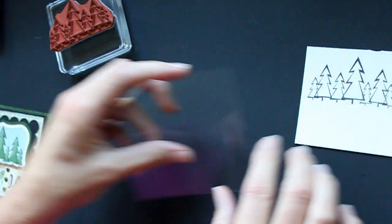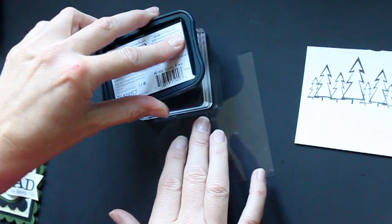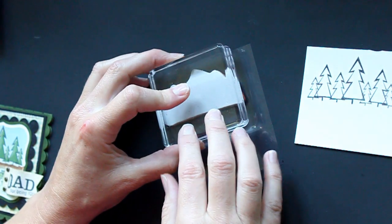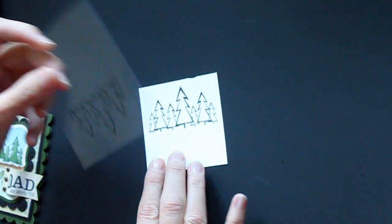And then take the same image, ink it up again, stamp it on your acetate, and then flip that over.